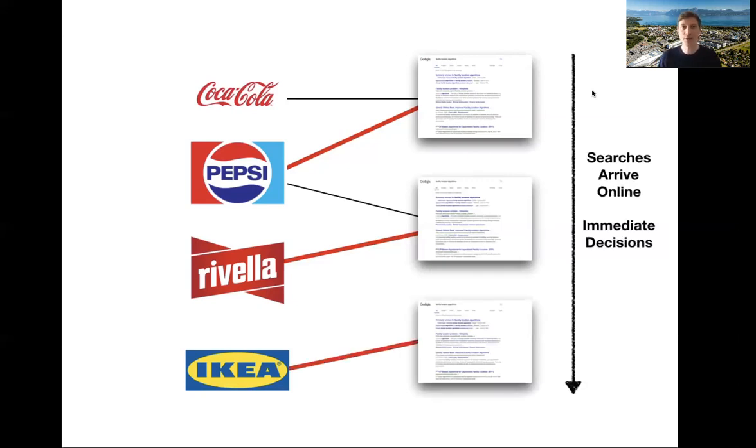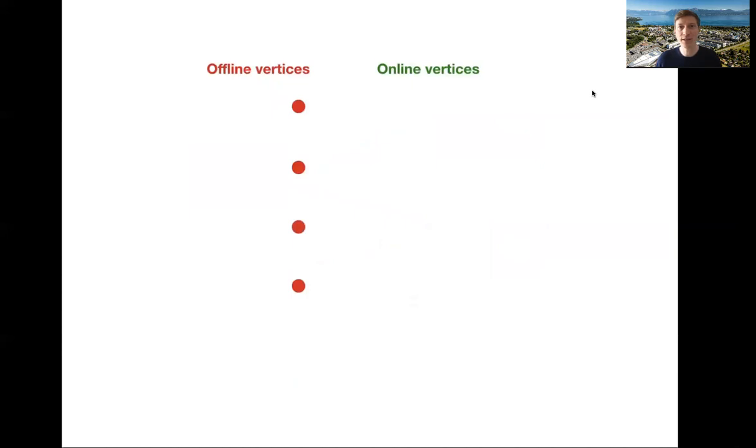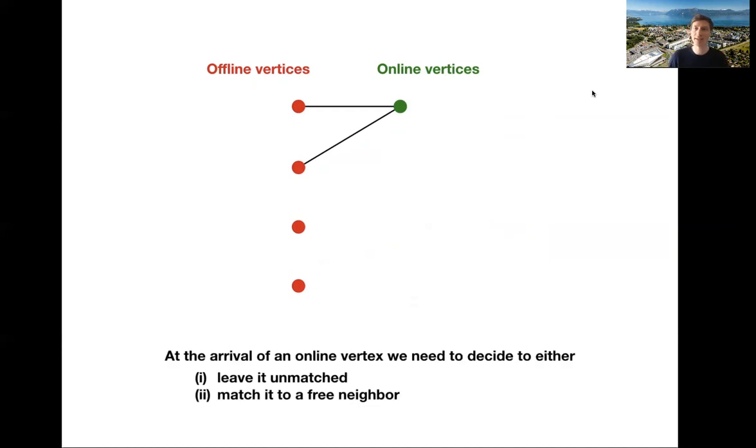So in this model, we have the advertisers already known on one side of the graph, and then the searches arrive online. And when a search comes, we need to make an immediate irrevocable decision on which ad to assign to that search. So more abstractly, we have the offline vertices, which corresponds to the advertisers. We have online vertices, and when a vertex arrives, we have to decide, do we want to match this vertex? And if so, to which neighbor should it be matched?